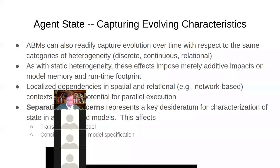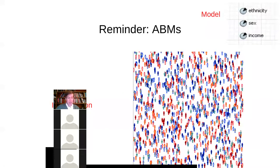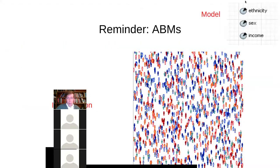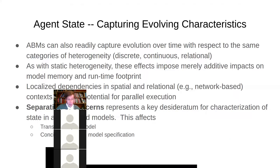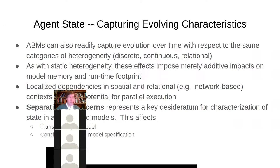If we add whether someone's an immigrant or not, we're just adding a single bit to what they require. That's a really advantageous component of this representation in agent-based models. We don't get this combinatorial explosion. Agent-based models don't have to deal with this curse of dimensionality associated with aggregate stock and flow models because they're not trying to slice and dice the population according to all possible combinations of characteristics. Each person can just have extra parameters layered in additively.